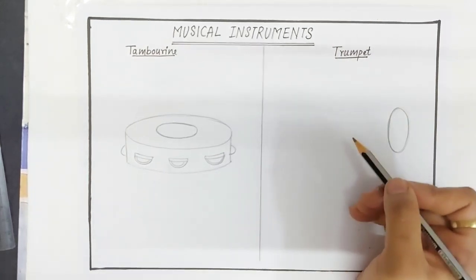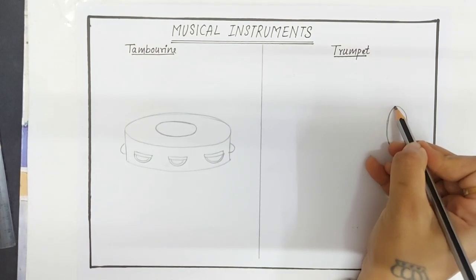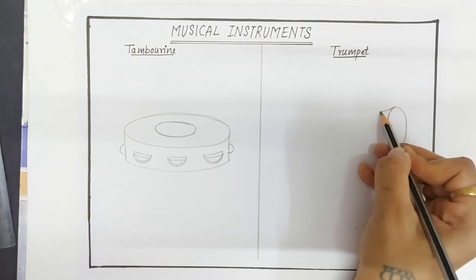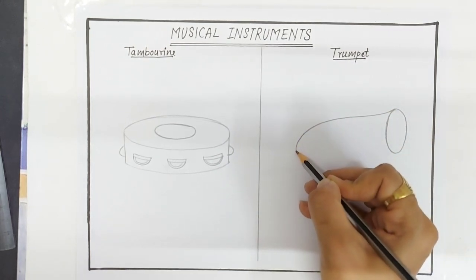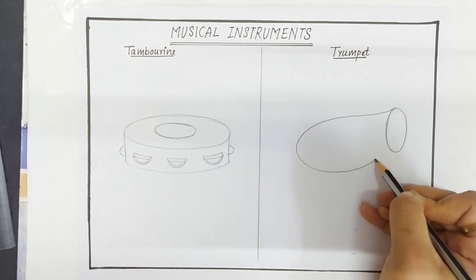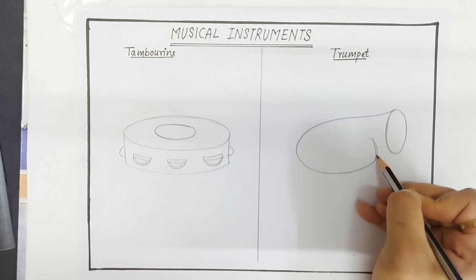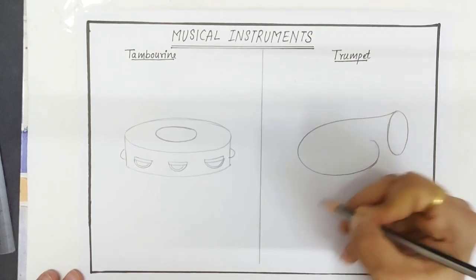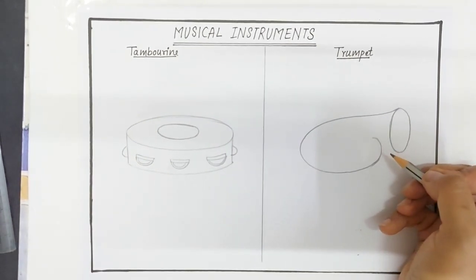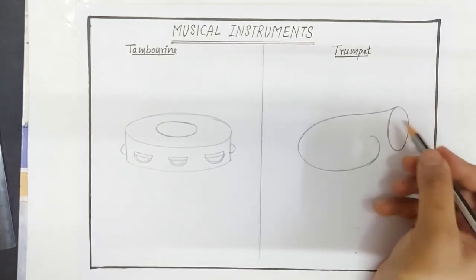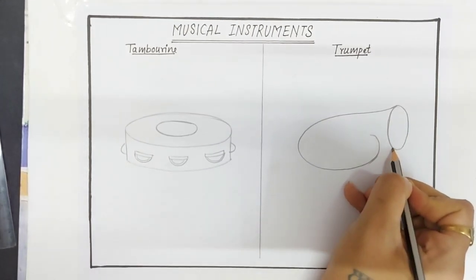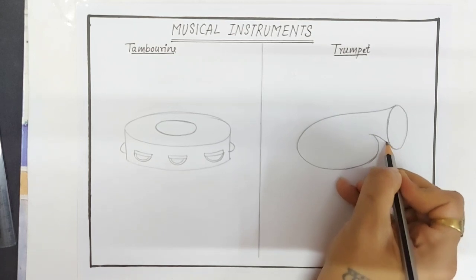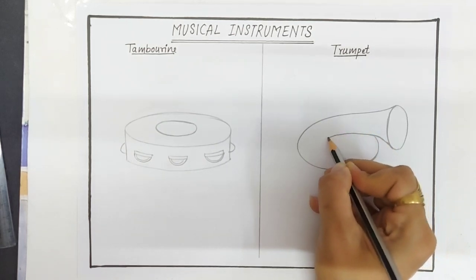Now draw a long curved line from the top of the trumpet. Then spiral around like this. Now draw a long curved line from the top of the oval and join the bottom like this.